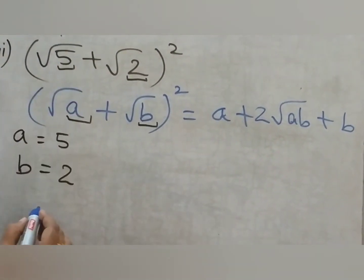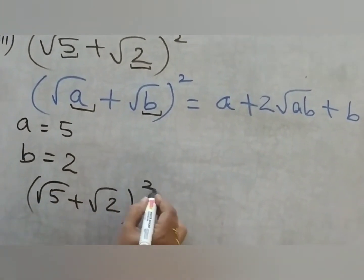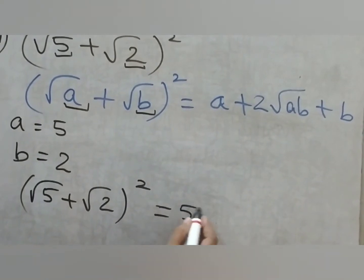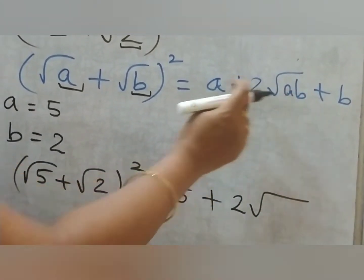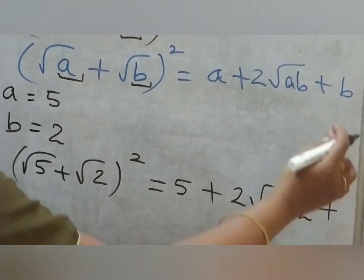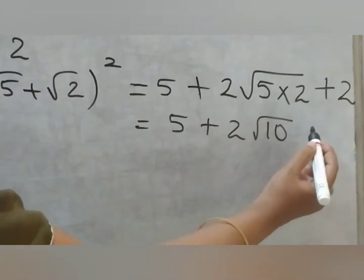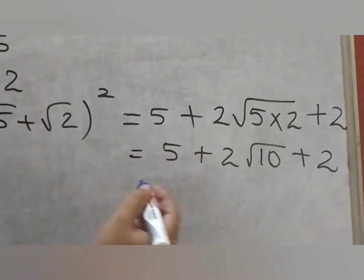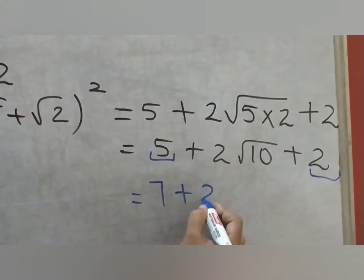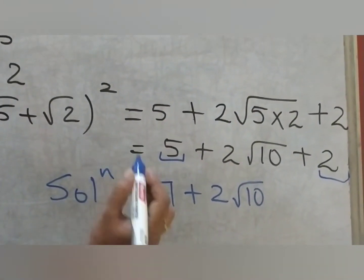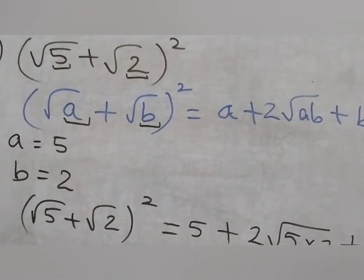Now use this formula and solve. (√5 + √2)² equals a, which is 5, plus 2 times the root of a×b — so 2√(5×2) — plus b, which is 2. Inside the root both are multiplied: √10. So we get 5 plus 2√10 plus 2. Can I add any two terms? The standalone numbers: 5 and 2 can be added, giving us 7 + 2√10. This is the solution children.